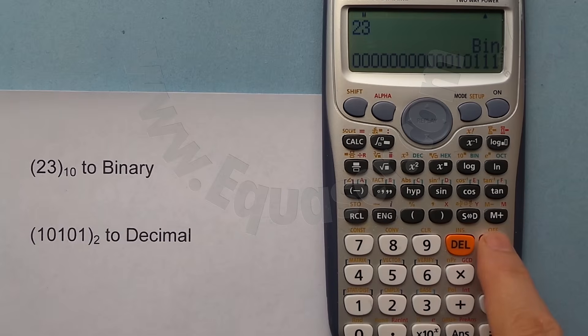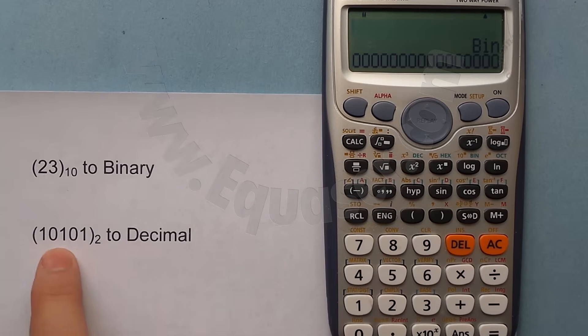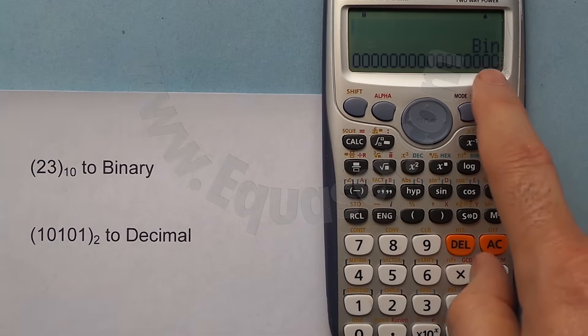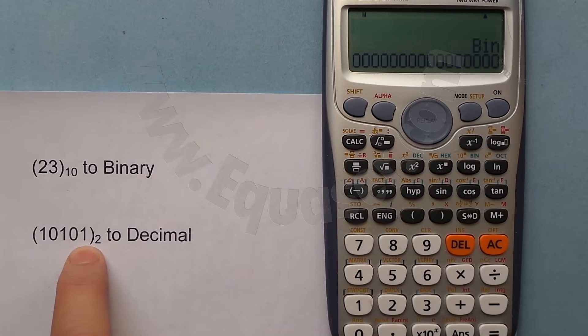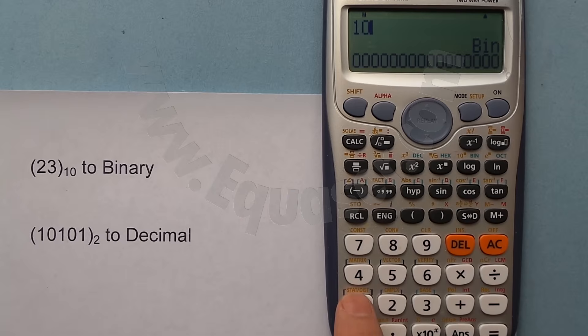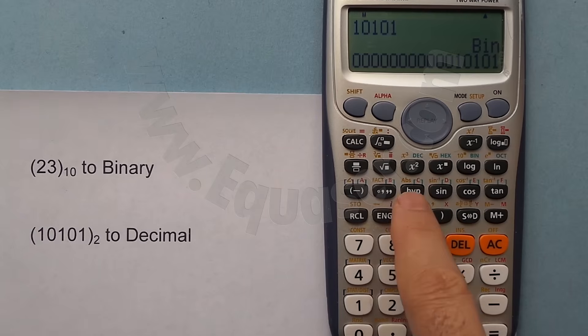Now I exit. Now I'm in binary mode. To convert binary to decimal, we have to be in binary. This is base 2. I press 1, 0, 1, 0, 1, and then equal sign. So now we have binary. To convert it to decimal, I press this, which is 21.